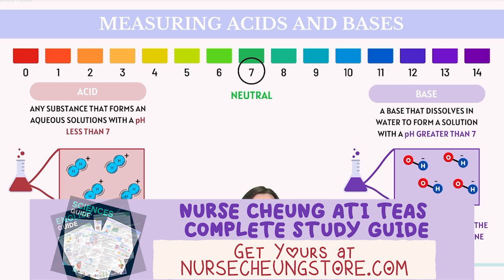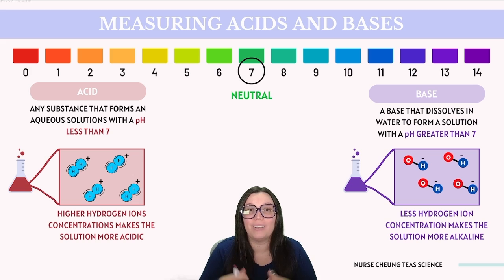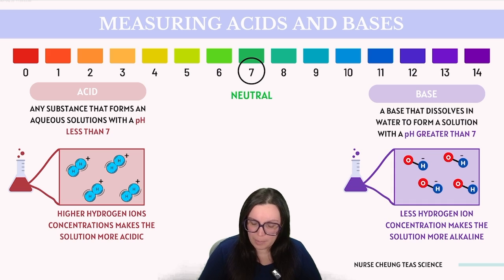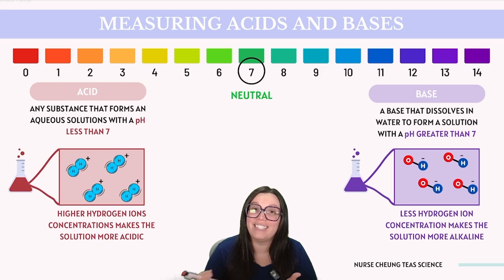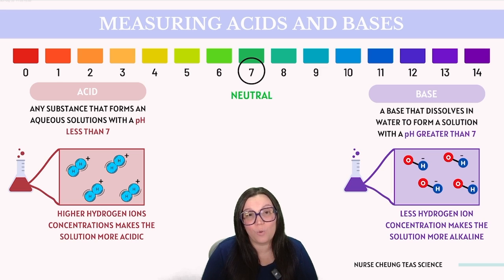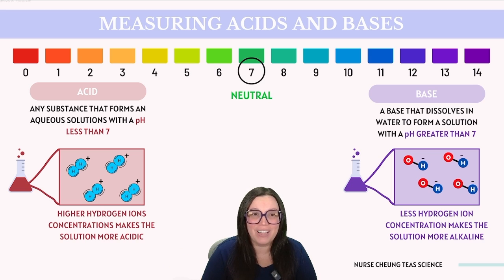Bases are substances with a pH greater than 7. Within the category of bases, there are specific subgroups known as alkalines. Alkalines are bases that are soluble in water, and when they dissolve, they produce hydroxide ions (OH⁻), contributing to the solution's basic nature. A great example is sodium hydroxide, also known as NaOH, which when dissolved in water disassociates into sodium (Na⁺) and OH⁻ ions. The OH⁻ ions combine with hydrogen ions in the water to form H₂O, effectively reducing the hydrogen ion concentration.